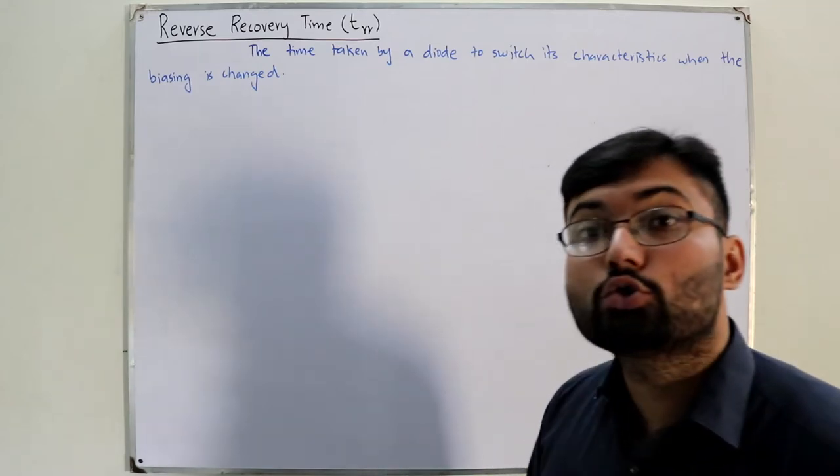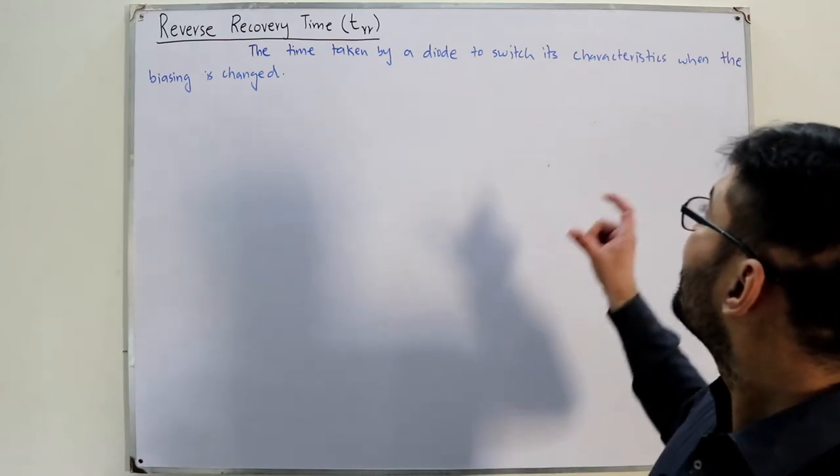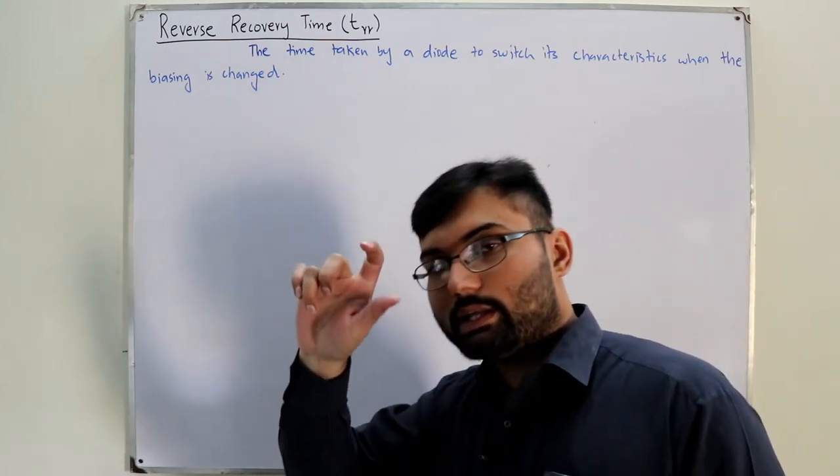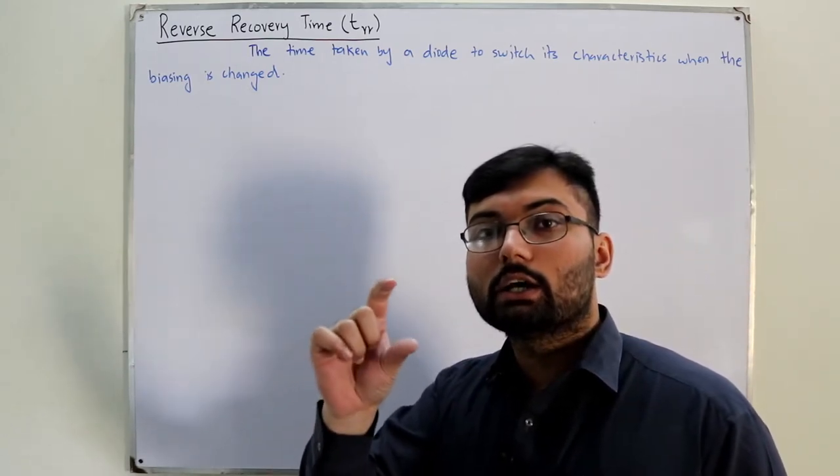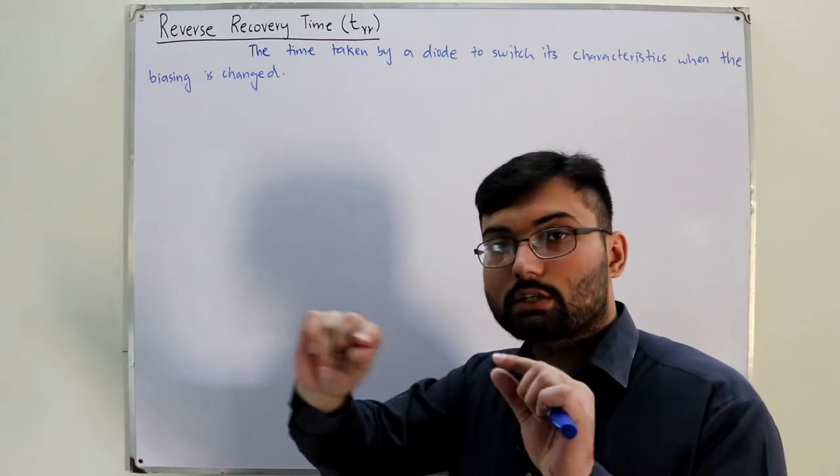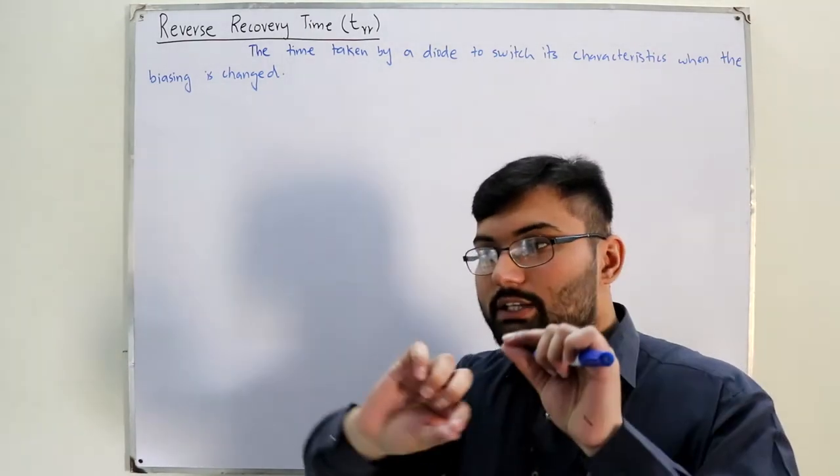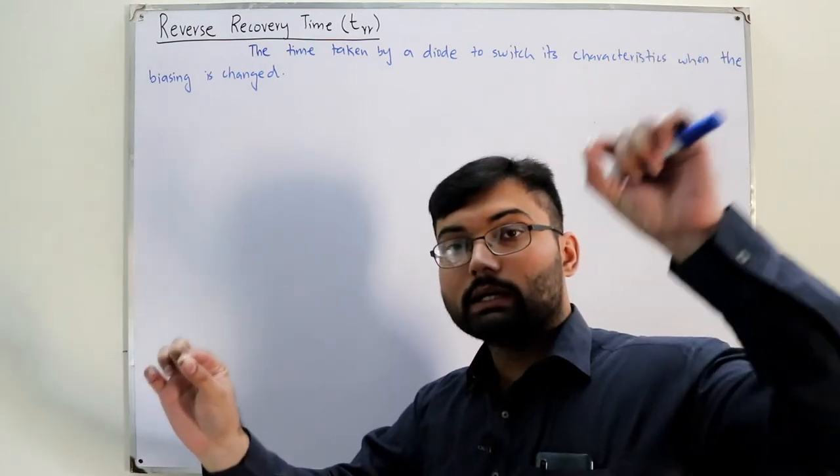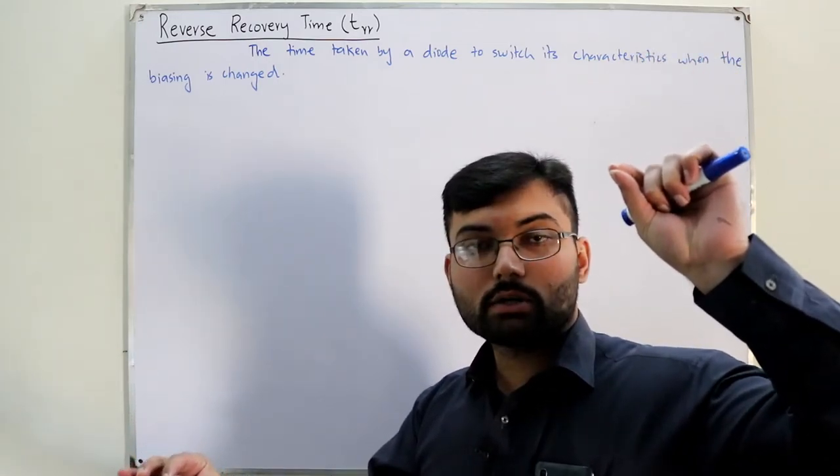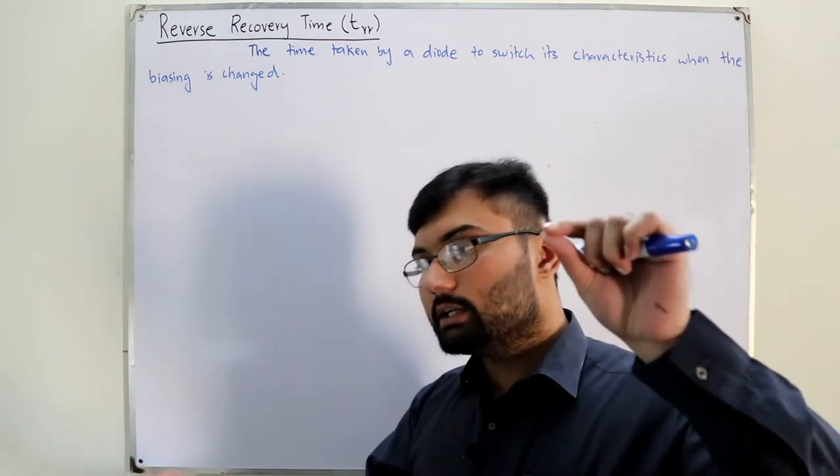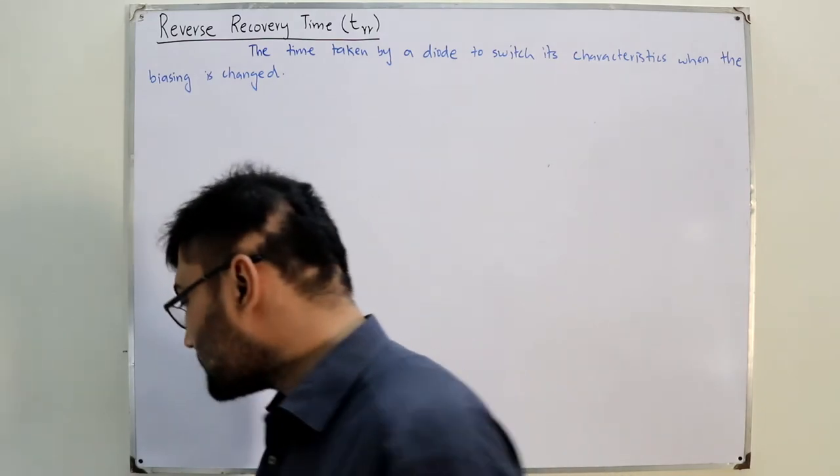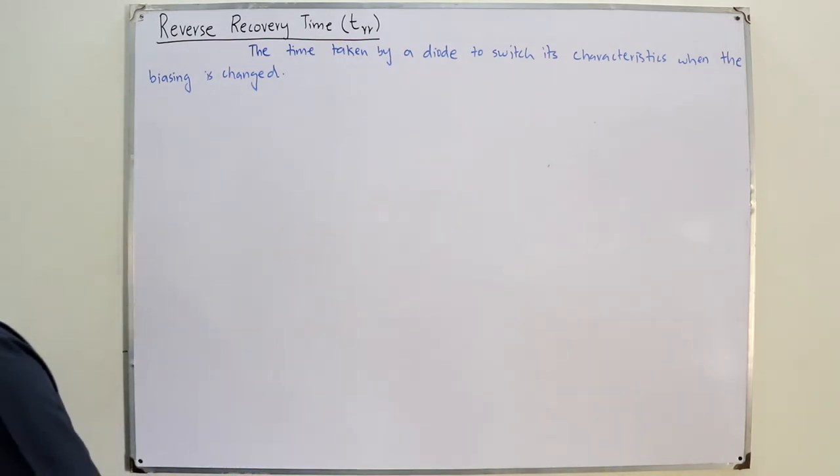Of course it could not drop at that particular time. It will take some time, it will take a certain time. And that certain time is the reverse recovery time. The time taken by the diode to switch its characteristics when the biasing is changed. So you have a certain level of current, you switch the biasing, so the time that it takes to reach that reverse saturation current from the maximum current that was already present in the forward bias condition, that time is called the reverse recovery time. So let us show it by a graph.